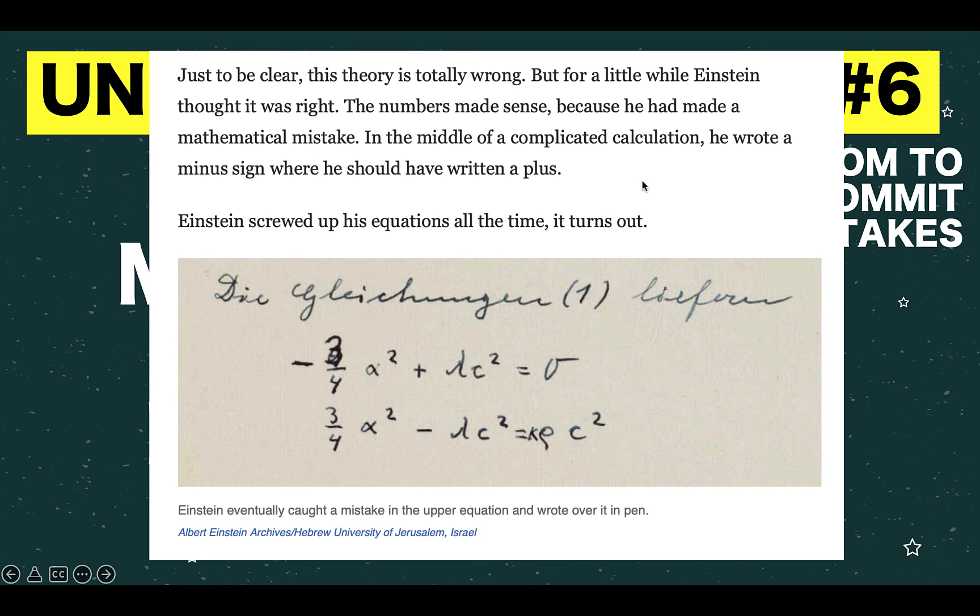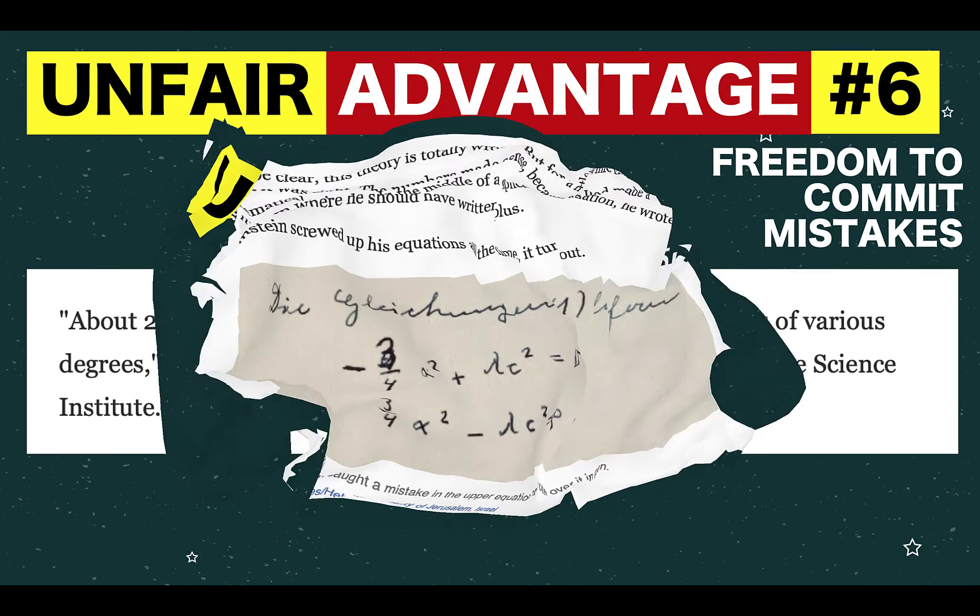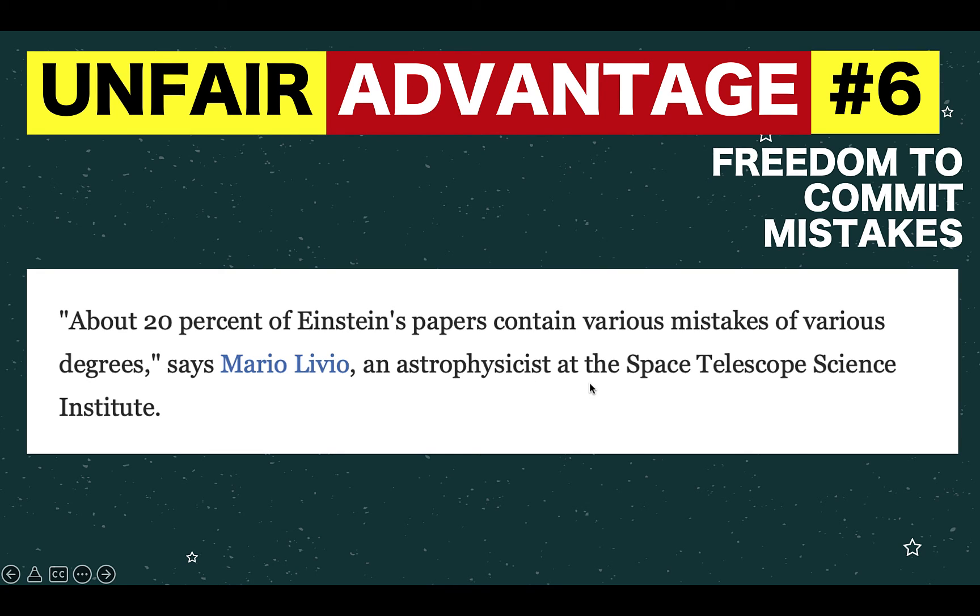In the middle of a complicated calculation, he wrote a minus sign where it should have been positive. And later on, he eventually caught the mistake, and he never published these results. In fact, according to Mario Liviu, an astrophysicist at the Space Telescope Science Institute, about 20% of Einstein's paper contained various mistakes of various degrees.